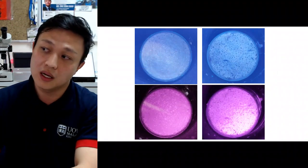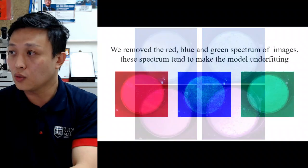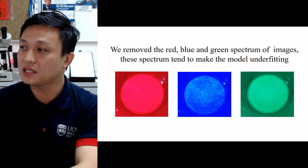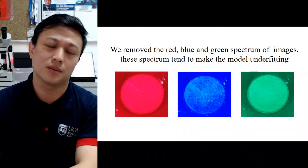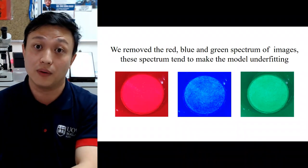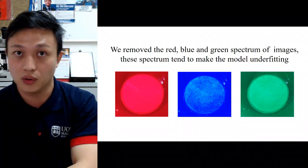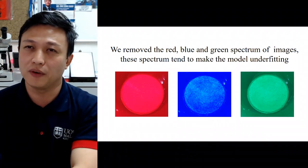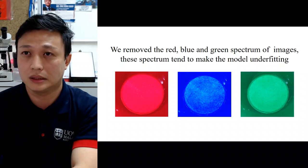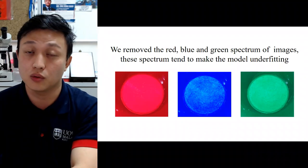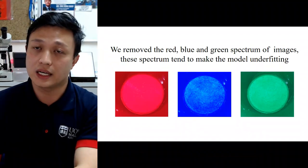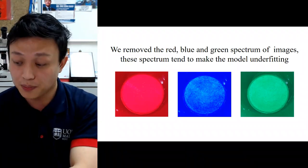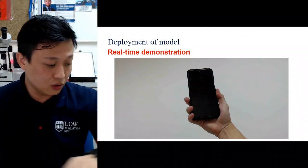Here is a sample of the images from the chamber. We removed the red, blue, and green spectrum because at the beginning of our experiment, including all those spectrums caused the model to underfit and perform poorly in accuracy. After removing them, the model's performance increased significantly.